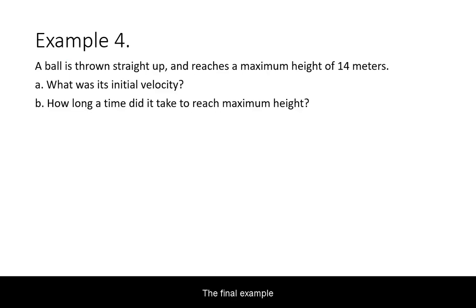The final example has a ball thrown straight up and reaching maximum height. When reading this problem, we highlight maximum height as well because it is code for vertical velocity being zero there.